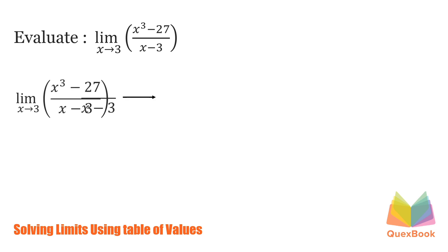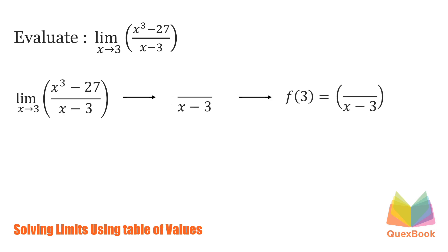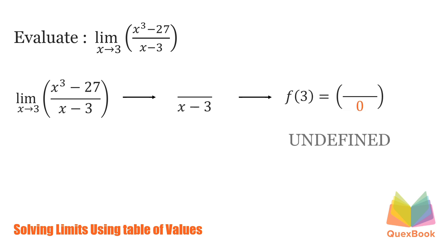Since the denominator is x minus 3, if we plug in 3 to the equation, it will give us a 0 in the denominator, which makes our answer undefined. Let us substitute 3 to the value of x — we'll have 3 minus 3 is 0. So to solve this limit, again, let's try to plug in numbers that are approaching to 3.